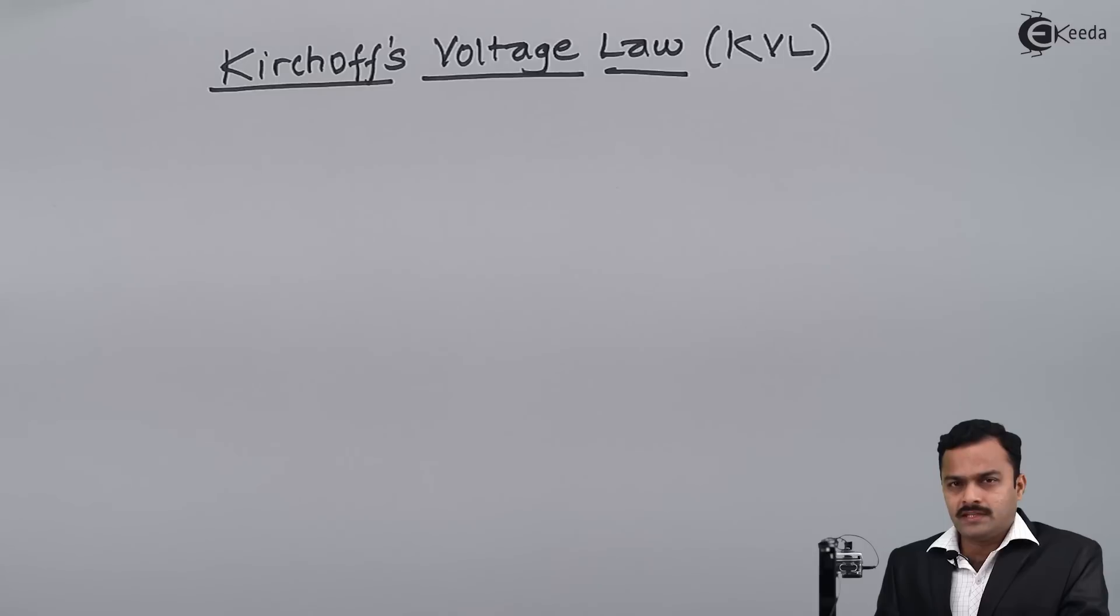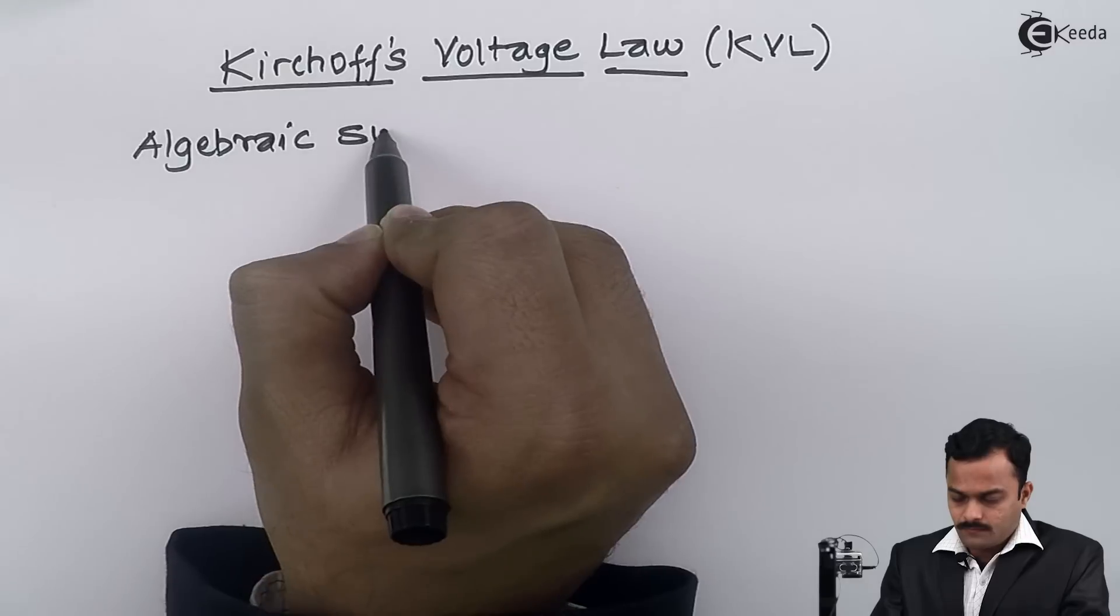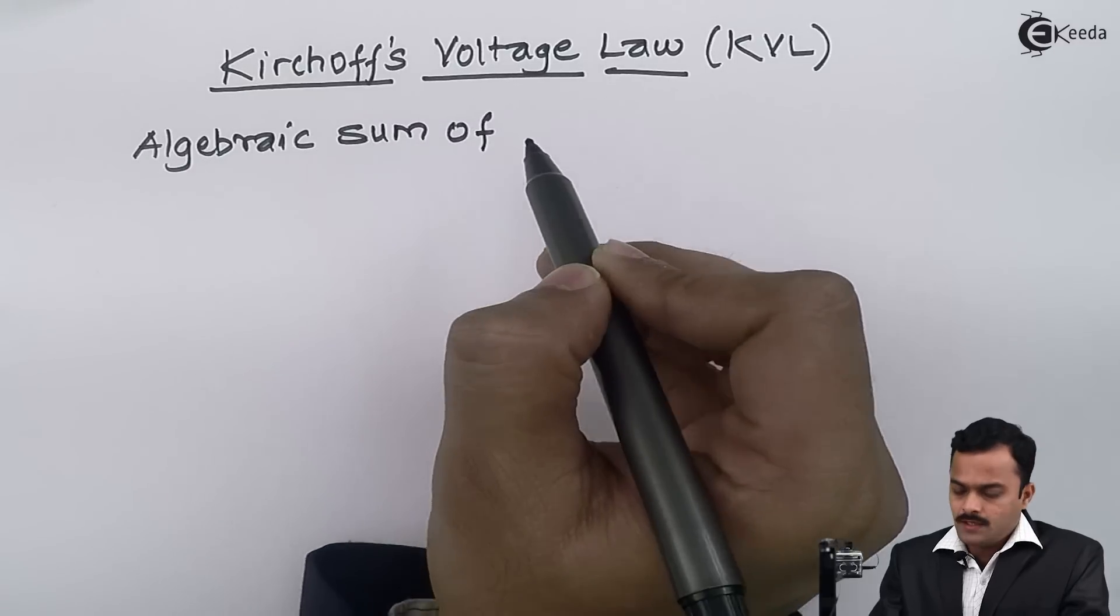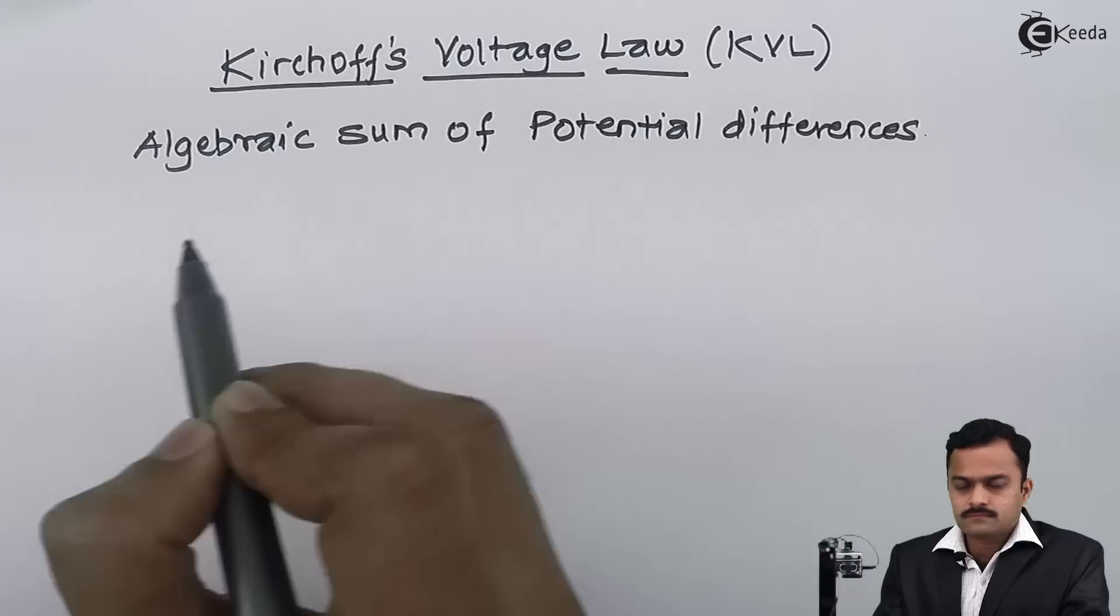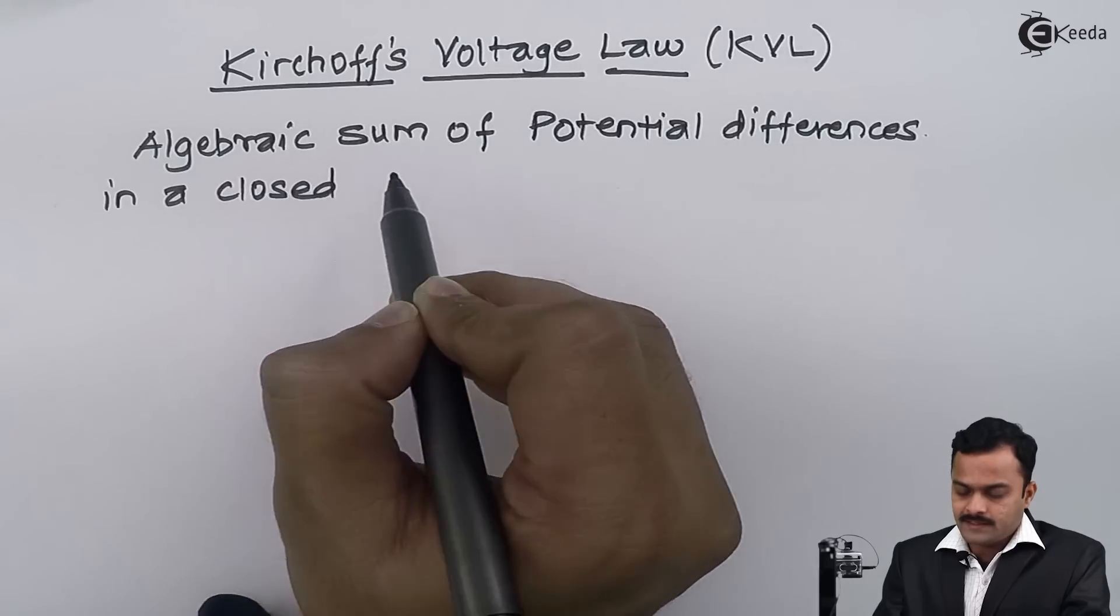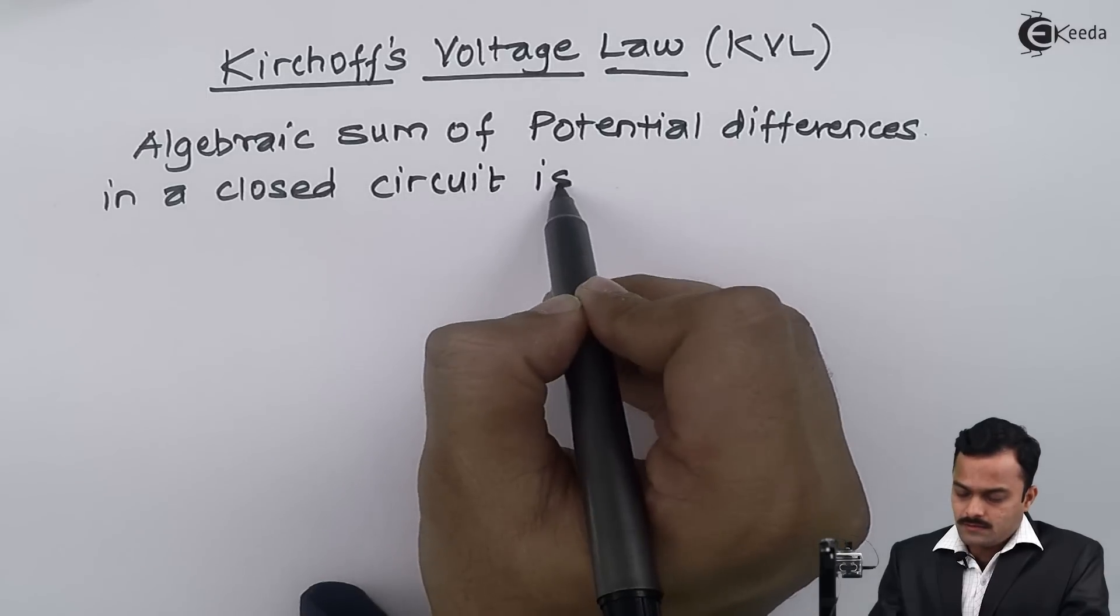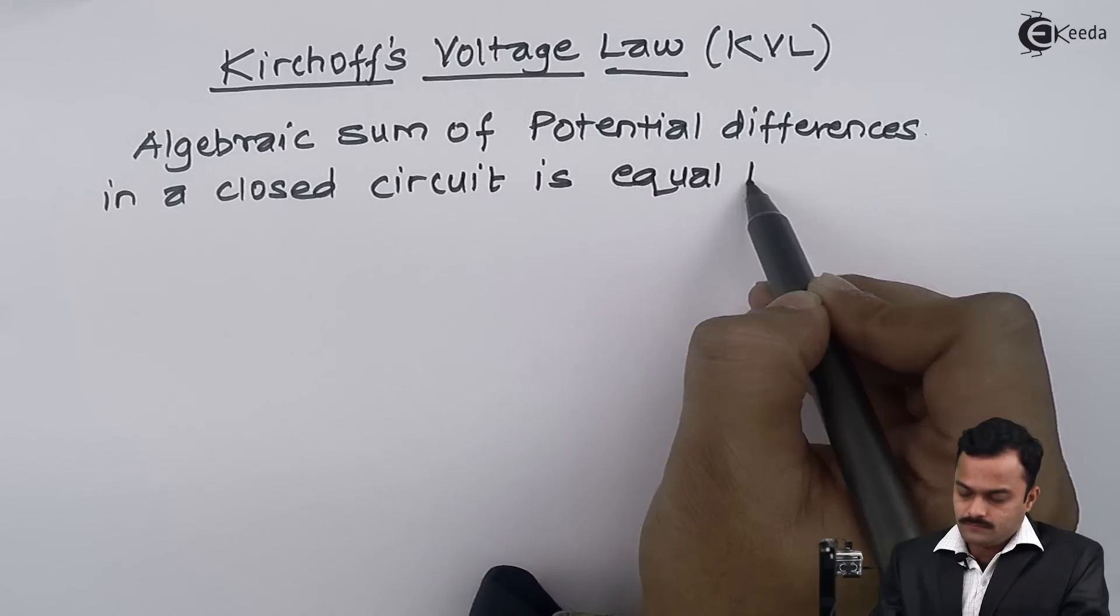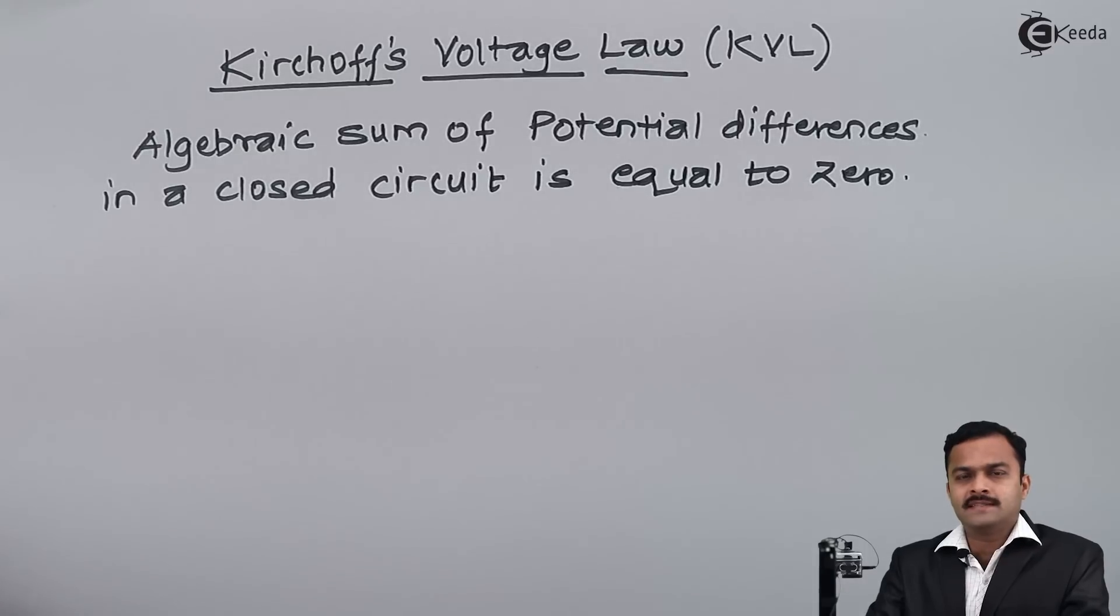The law states that algebraic sum of all the potential differences in a loop is always equal to zero. I repeat: algebraic sum of potential differences in a closed loop circuit is equal to zero.